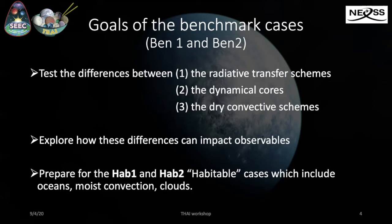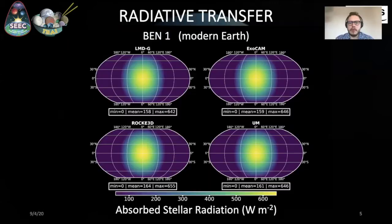Last but not least, the goal with these benchmark simulations — and this is the reason why we call them benchmark one and benchmark two — is to prepare for the next set of simulations, the AB1 and AB2, which are habitable case scenarios that will include oceans, moist convection, and clouds. The big motivation behind these benchmark cases is really to be able, at the end, to disentangle between the effects that clouds and water vapor may have on the transmission spectra observed, in particular with the James Webb, and other physical mechanisms such as radiative transfer, dynamical core, or dry convection.